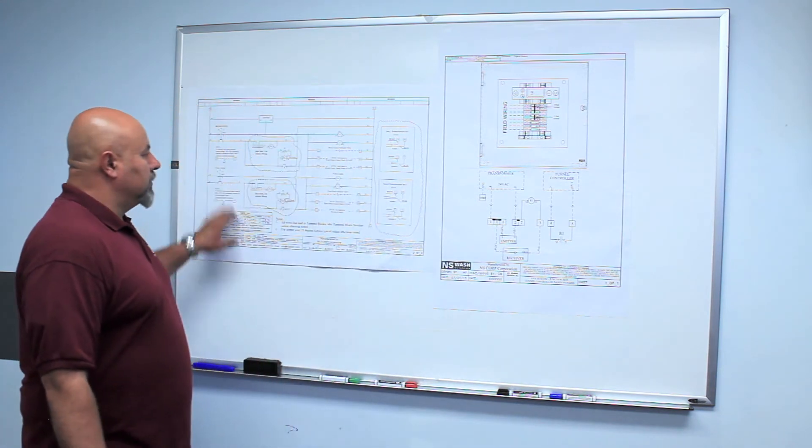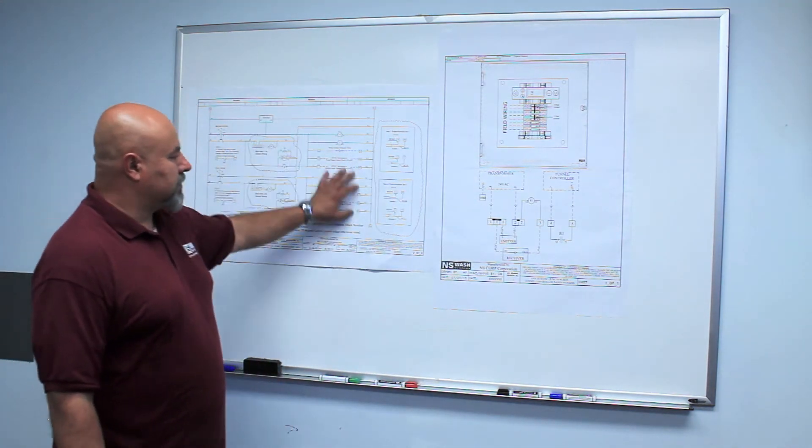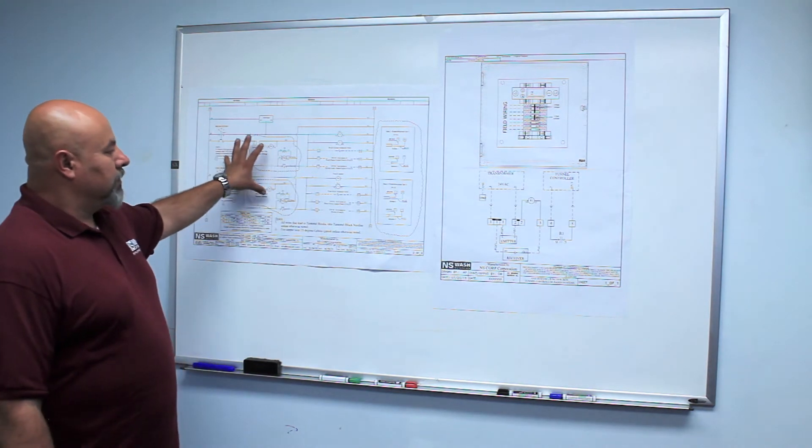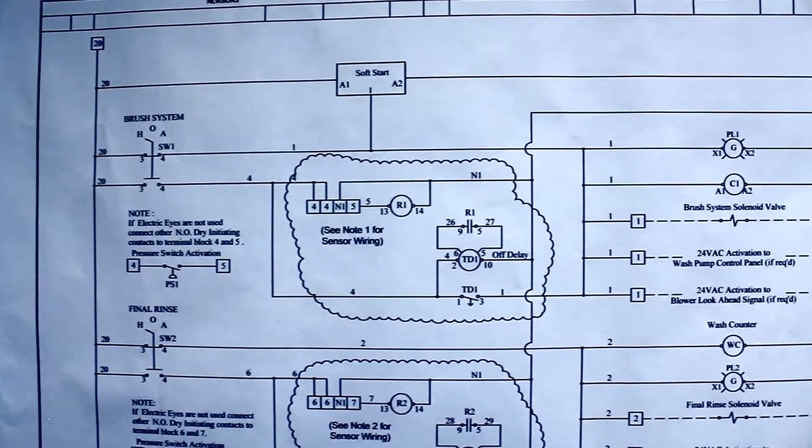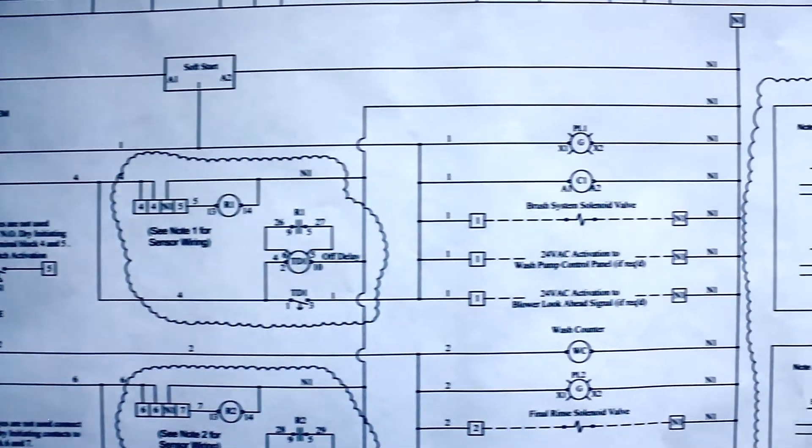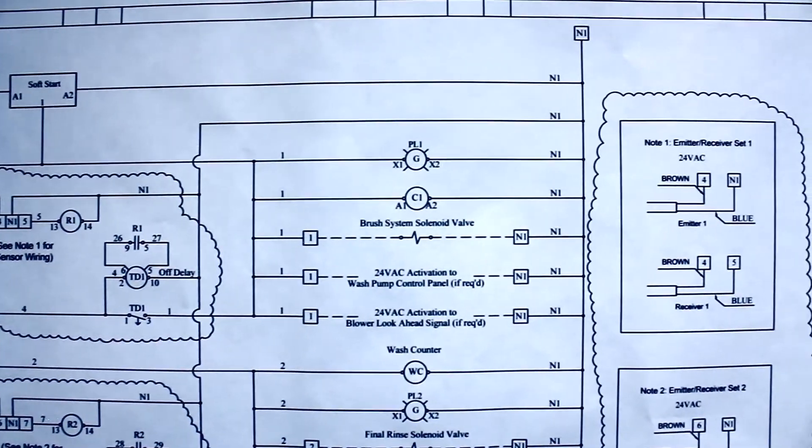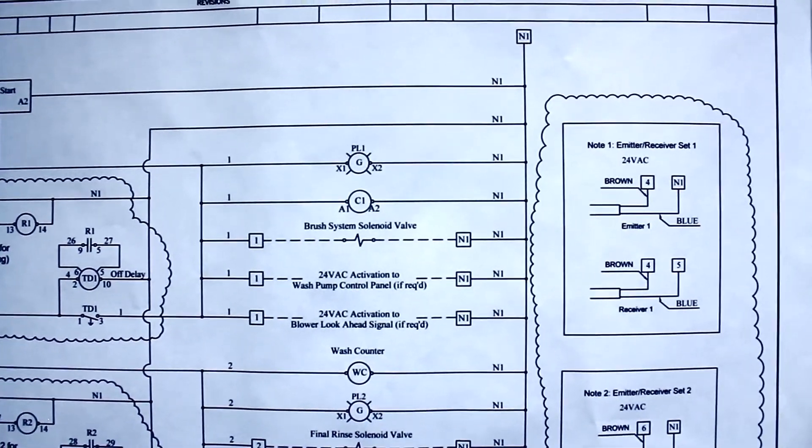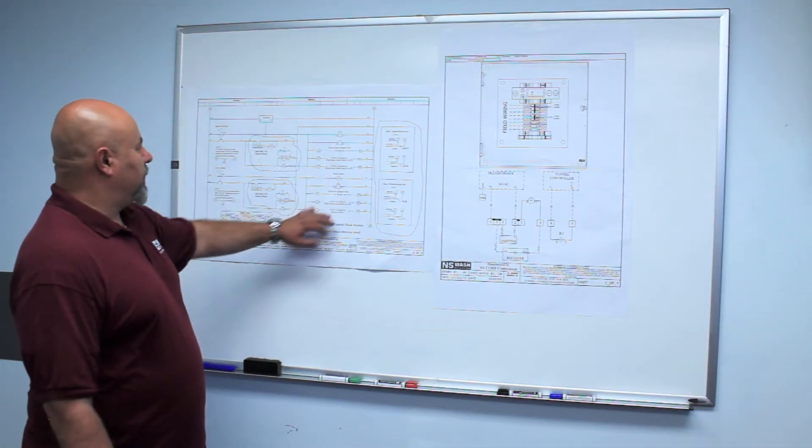Here's another schematic, which shows this is a more complex schematic. This is a machine control panel, which in here we have other components like brush system solenoid, wash pumps, blower look ahead, other features, other pieces of equipment.